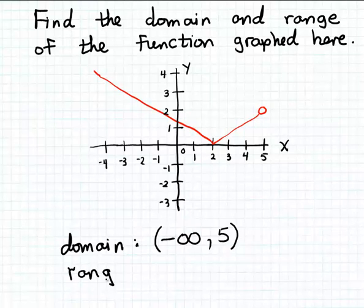All right, now let's try writing the range. So let's look at the extent of the graph along the y-axis to see what output values we get from this function. And we can see that the minimum output value corresponds to this point on the graph. That would be 0 is the minimum output value that we get from this function. That matches an input of positive 2.